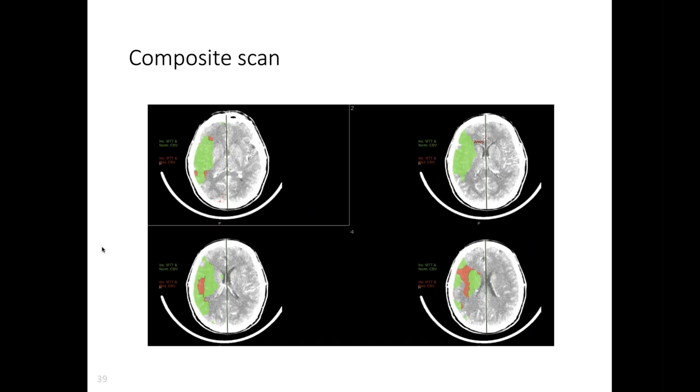We put those things together to get this idiot-proof red-green thing. Look at the labels of what green and red say. Red is the ship has sailed, that part of the brain has already infarcted because there's increased mean transit time and reduced CBV - blood's taken too long to get there and not enough is getting there. The green part, which is the salvageable penumbra as opposed to the red which is the ischemic core, the green is increased mean transit time - blood's taken too long to get there - but normal CBV, meaning overall the amount of blood getting there is what it needs to be.